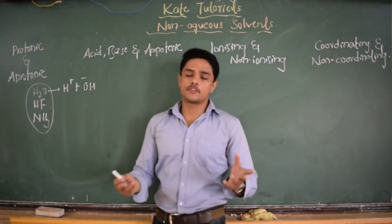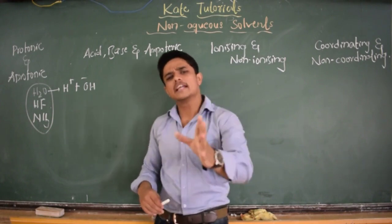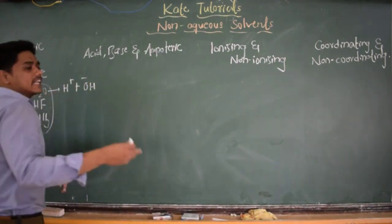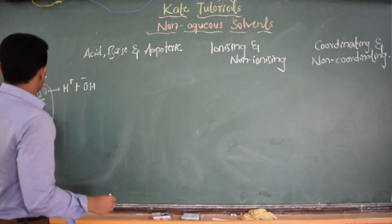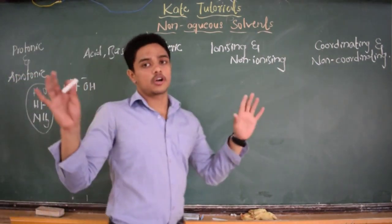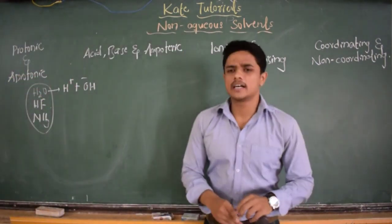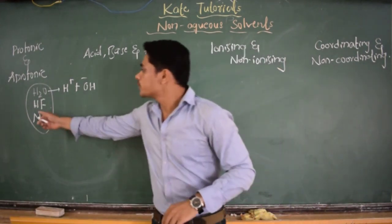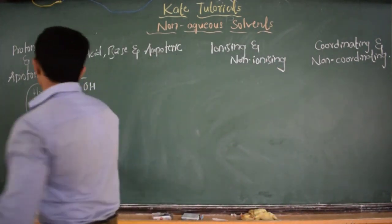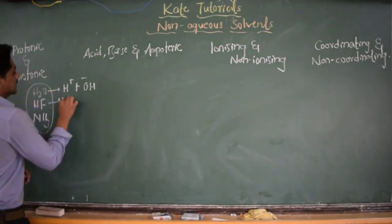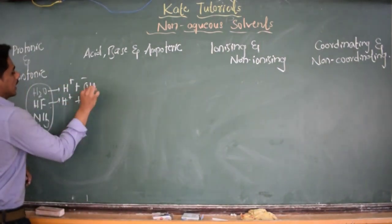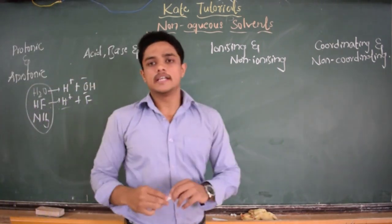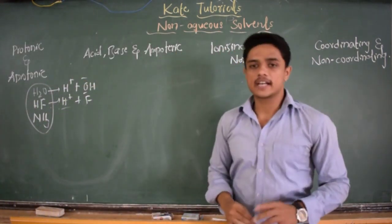Similarly, with HF — HF is actually a weak acid compared to HCl or HI. HI is the strongest acid and HF is the weak acid. But from HF as a solvent, we are going to get H⁺ ion and F⁻ ion. Since we are going to get H⁺ ion, it can be classified as a protonic solvent.